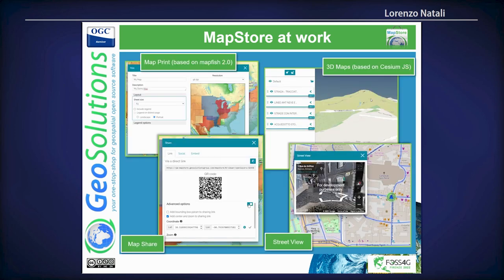There are a lot more plugins. I'll mention a few: map printing that allows you to create PDFs from the map or print in different formats and page sizes; 3D maps based on Cesium so you can switch any map to 3D mode and use terrain models; and a sharing tool that allows you to scan QR codes to share on social networks or embed the map in another website via iframe. There is also Street View, compatible with Google Street View — you can insert your API key and use it.